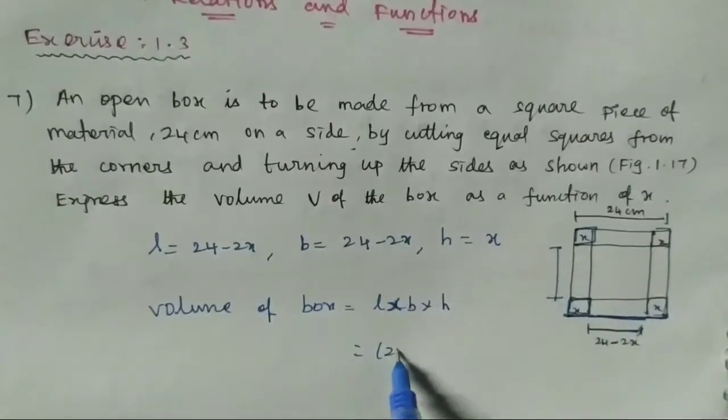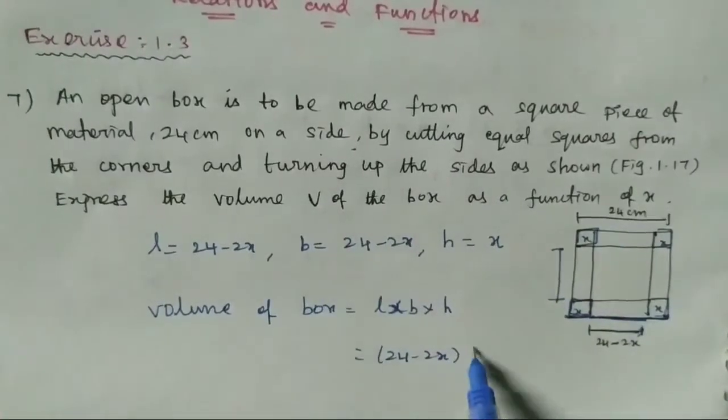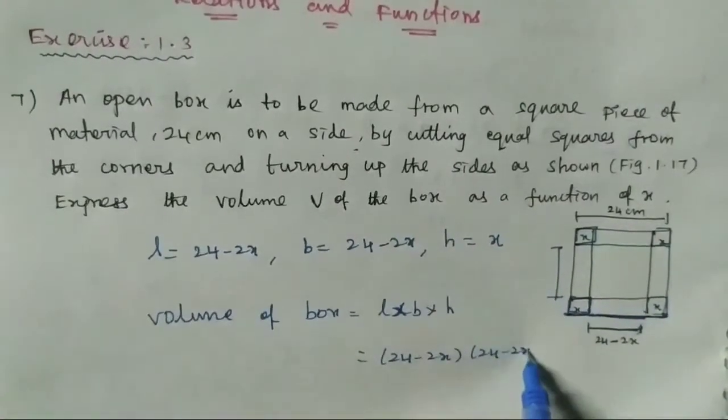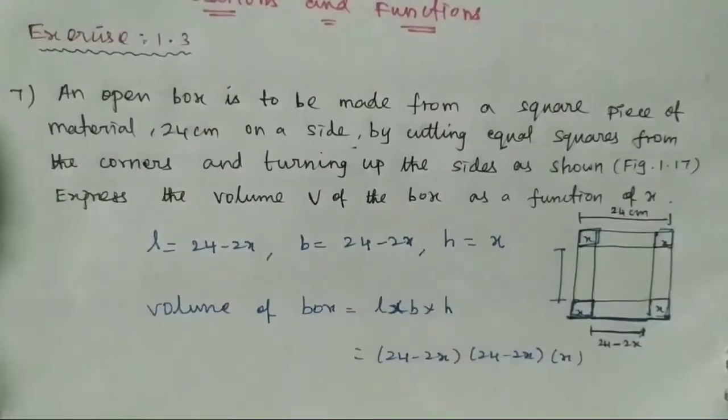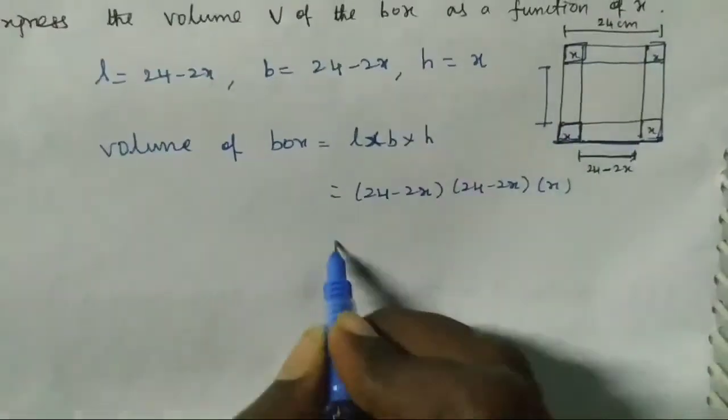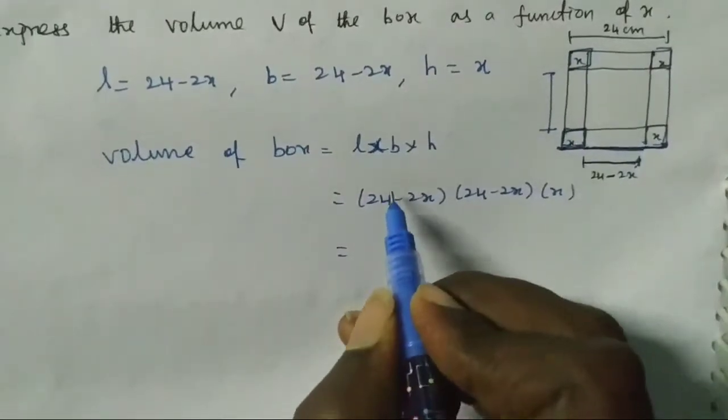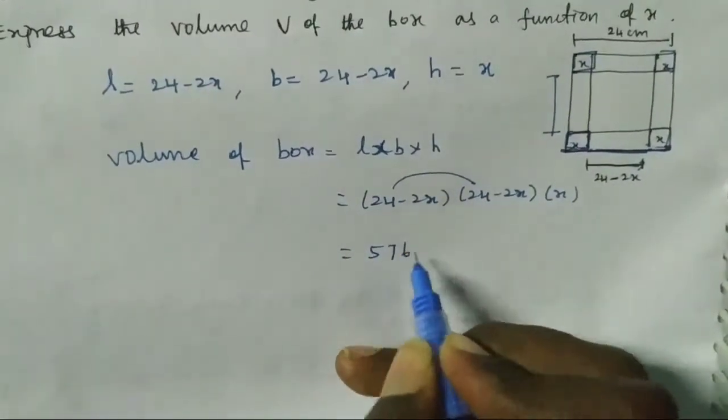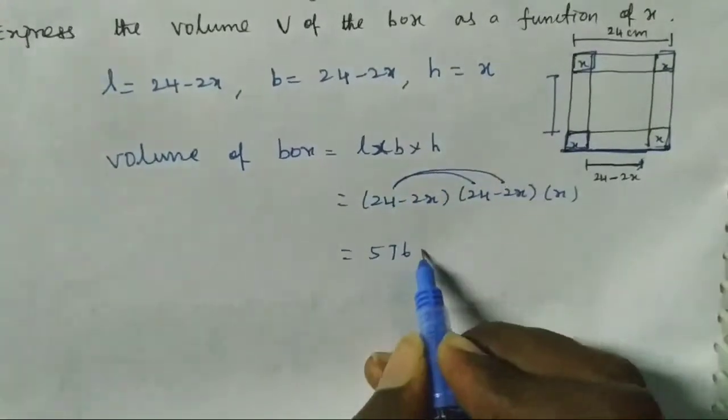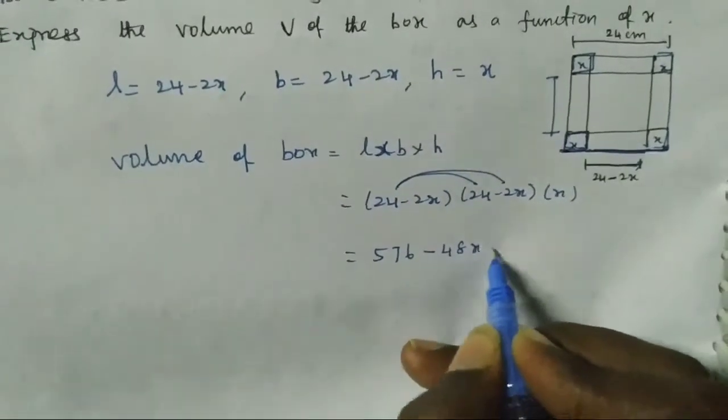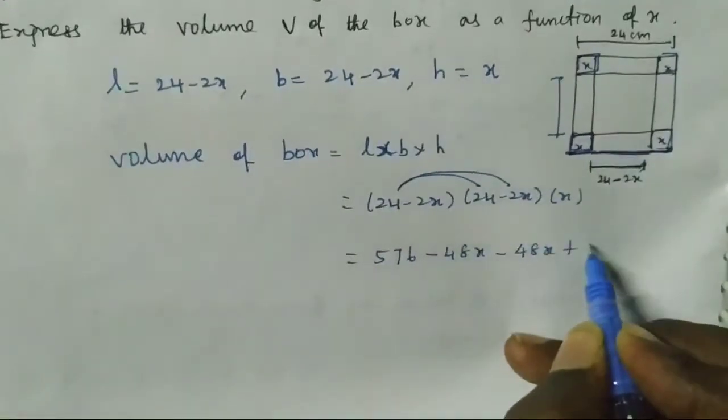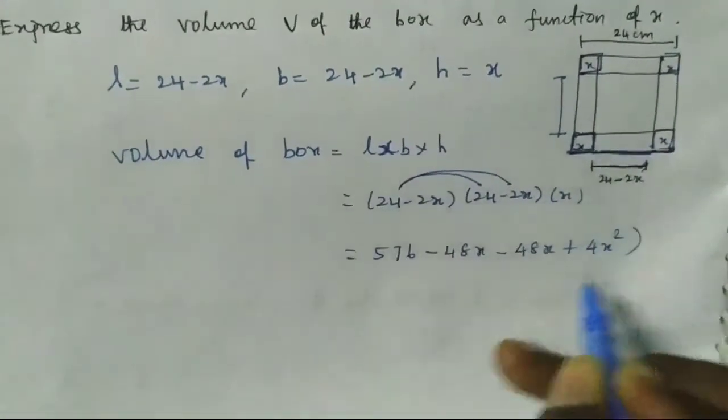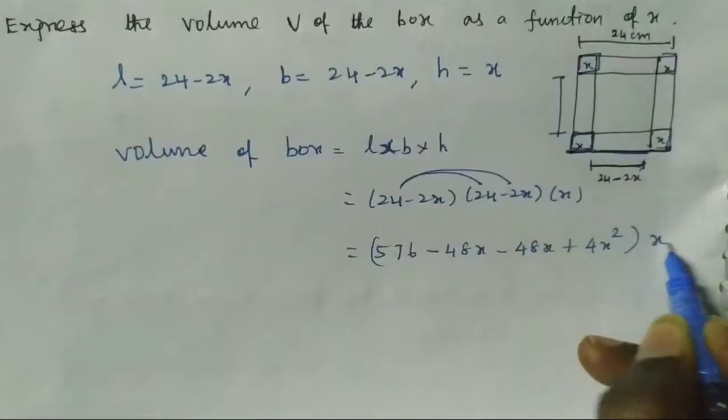The volume of the box is length times breadth times height, which equals (24 - 2x) times (24 - 2x) times x. First, we multiply 24 times 24 to get 576, then minus 48x plus 4x square.